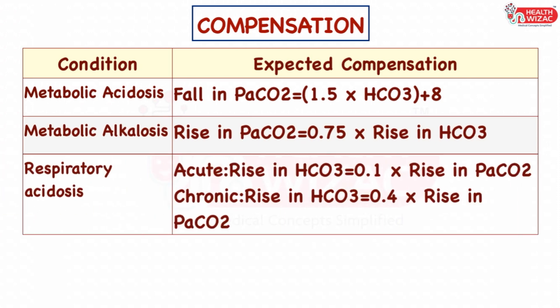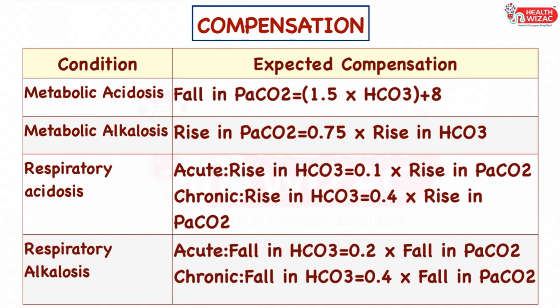In respiratory acidosis, PaCO2 is high, so the body compensates by increasing bicarbonate. The expected rise in bicarbonate in an acute condition is 0.1 × rise in PaCO2, whereas the chronic rise is 0.4 × rise in PaCO2. In respiratory alkalosis, PaCO2 falls, so the body compensates by decreasing bicarbonate. The expected fall in bicarbonate in an acute condition is 0.2 × fall in PaCO2, whereas the chronic fall is 0.4 × fall in PaCO2.